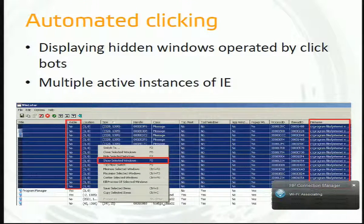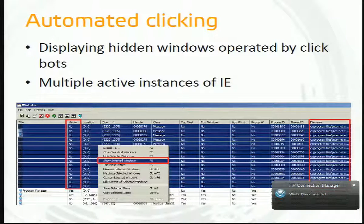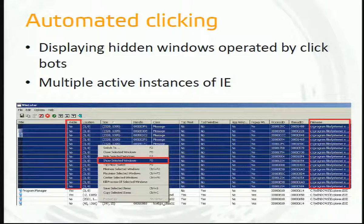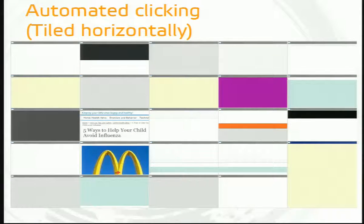In another experiment, we wanted to see what's really going on in these windows. We used the WinLister program, which shows all windows running on the system and provides interesting information. In the last column, marked in red, it indicates there are windows belonging to Internet Explorer. In the third and fourth columns we can see many windows located in the same position, with the same size, all with visibility set to hidden. This tool allows us to make these windows visible.